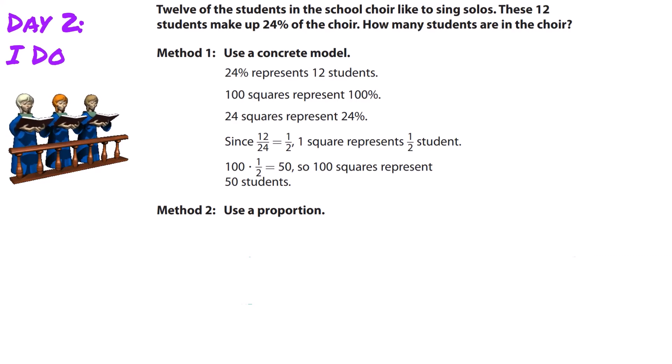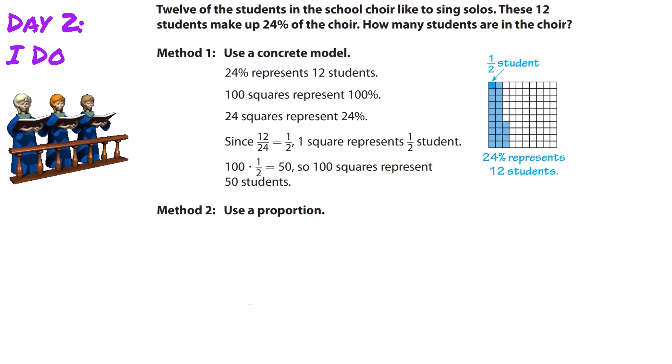Now let's verify using the second method: proportions. But first, let's examine the concrete model. We see 24 squares shaded out of 100 squares. The ratio is 1/2 student per square—this is our constant of proportionality or unit rate, meaning one box represents 1/2 of a student.